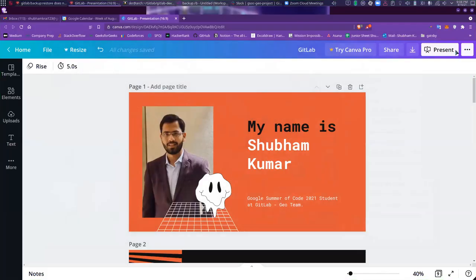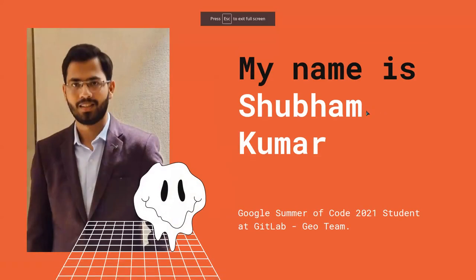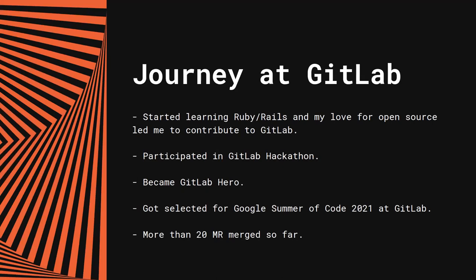Let's head on to our last presentation. Hi everyone, my name is Siobhan Kumar and I'm working with the Geo team for this Google Summer of Code. A little bit about my journey at GitLab: I started contributing in February when I was learning about Ruby and Rails, then participated in a GitLab hackathon, became a GitLab Hero, and applied for Google Summer of Code. So far I have more than 20 merge requests merged.